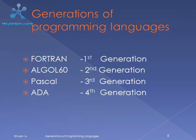Generations of programming languages: Fortran — First Generation; ALGOL 60 — Second Generation; Pascal — Third Generation; Ada — Fourth Generation.